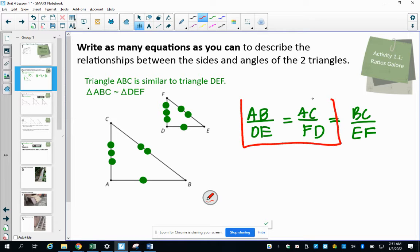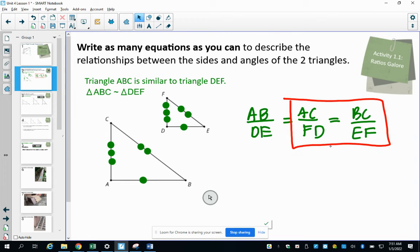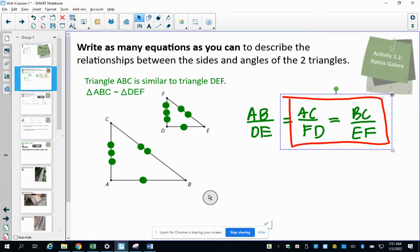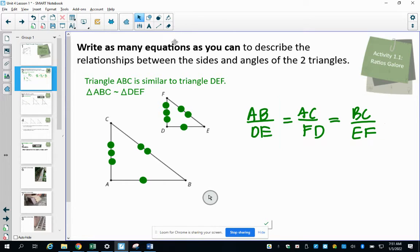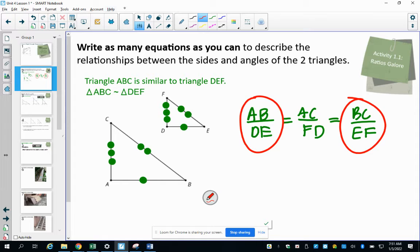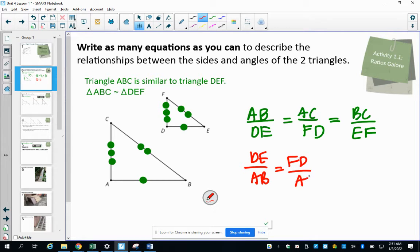So we could write this one would be fine, that would be one proportion you could set up. And then you could also set up the first and the last. So you could have this one equal to this one. And you could also flip these upside down. So you could have DE on top over AB and then equals FD over AC, going from small triangle to big triangle. And any two of those set equal to each other would be fine.